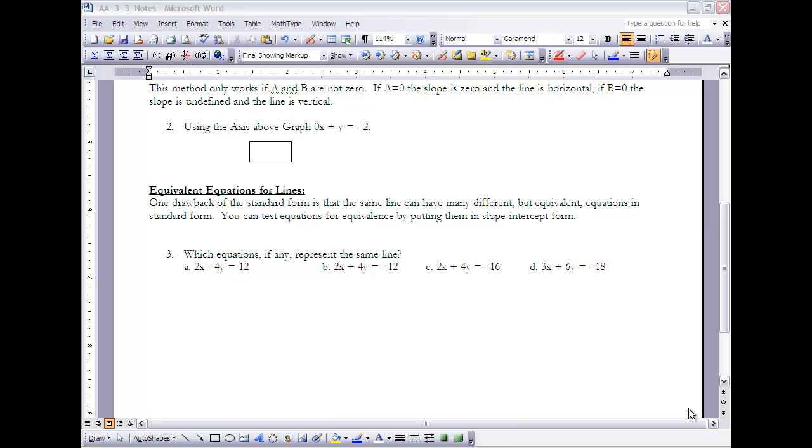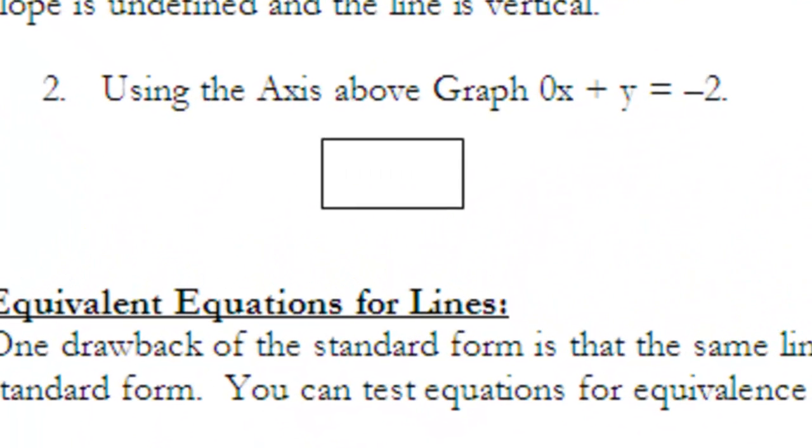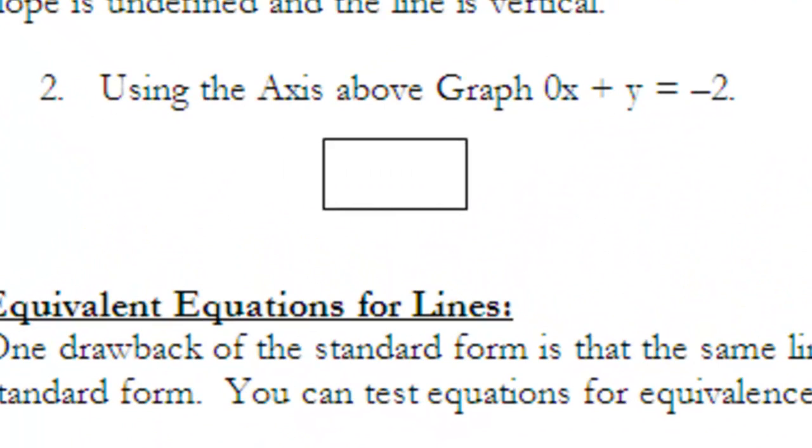If A equals 0, then we're going to end up with an equation of a line that is horizontal, and if B equals 0, we're going to end up with a line that is vertical. We know that a horizontal line has a slope of 0, and we know that a vertical line has a slope that is undefined. If I take a look at this example right here, using the x's above graph 0x plus y equals negative 2, if I have 0x plus y equals negative 2, that's the same as saying y equals negative 2.